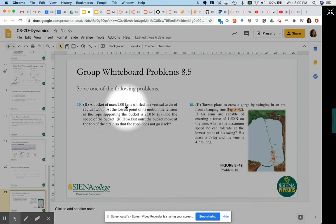A bucket of mass 2 kilograms is whirled in a vertical circle of radius 1.2 meters. At the lowest point of its motion, the tension in the rope supporting the bucket is 25 newtons. Find the speed of the bucket and then how fast must the bucket move at the top of the circle so that the rope does not go slack.